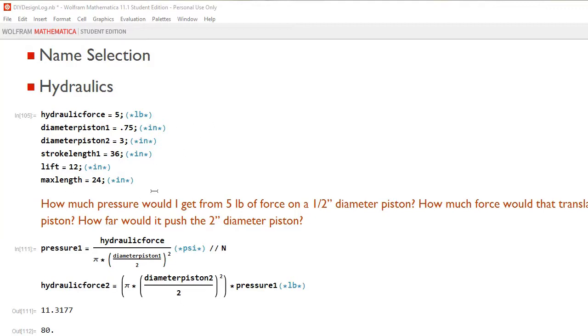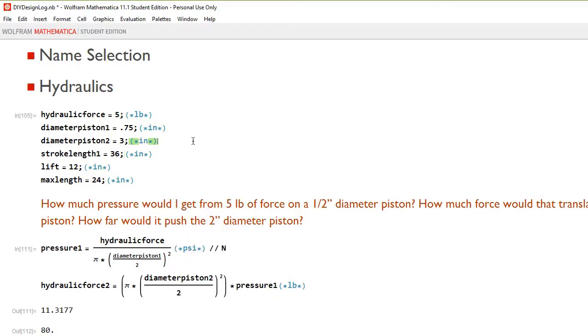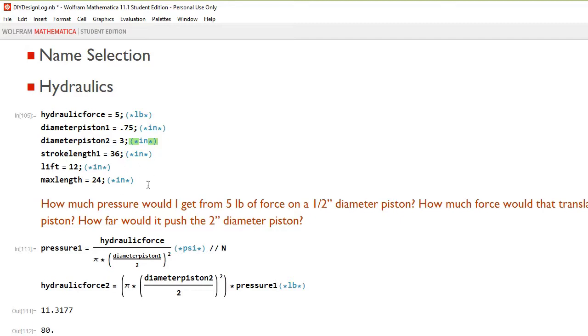So I'm asking myself a few questions. So how much pressure would I get from a 5-pound force on a half-inch diameter piston? How much force would that translate to if that pressure created was applied to a 2-inch diameter piston? How far would it push the 2-inch diameter piston? So I'm answering these questions by use of pressure equations and volume and things like that. And I'm interested in knowing, okay, so I said I'm going to apply a hydraulic force of 5 inches. And I'm not using the same dimensions that I asked in this question. My smaller diameter piston is a three-quarter inch diameter. My larger diameter piston is a 3-inch. I'm going to move the smaller diameter piston 36 inches, 3 feet. And these other variables will come into use later.